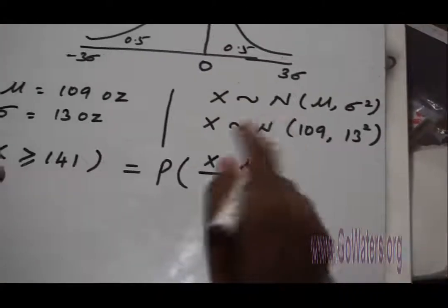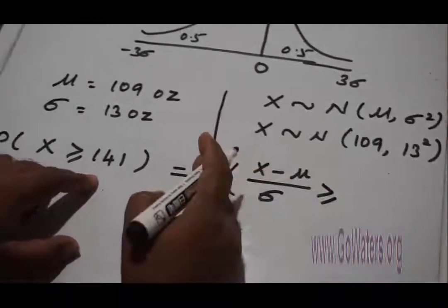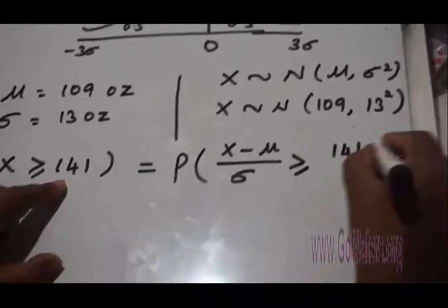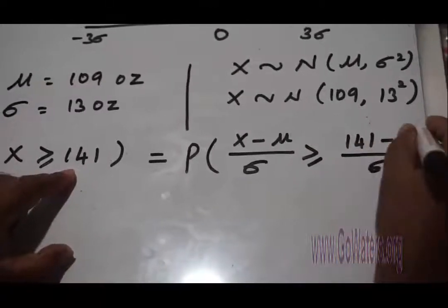In order to maintain the inequality, whatever I'm doing on the left-hand side, I must do on the right-hand side. So 141 minus μ divided by σ.